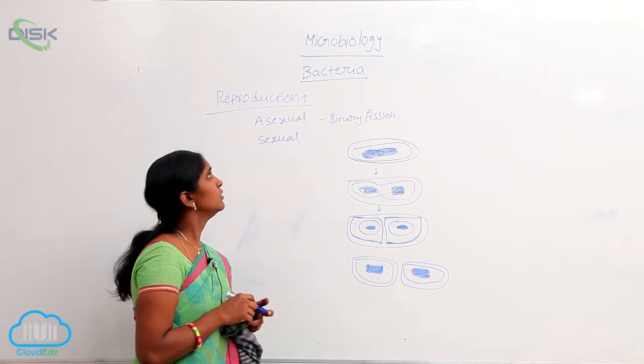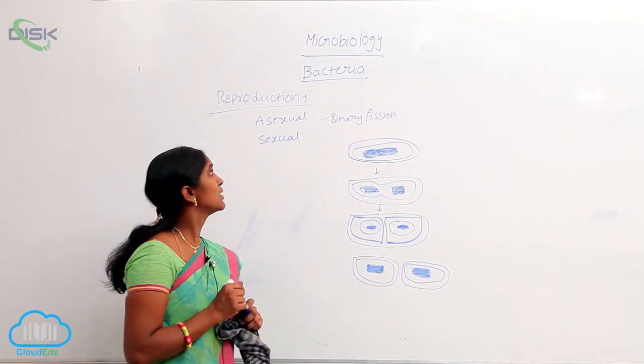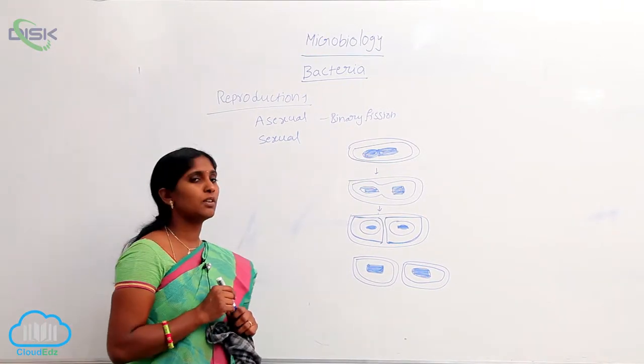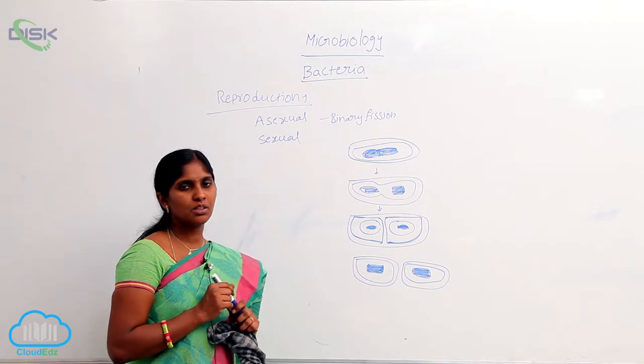Reproduction in bacteria has two types: asexual reproduction and sexual reproduction.